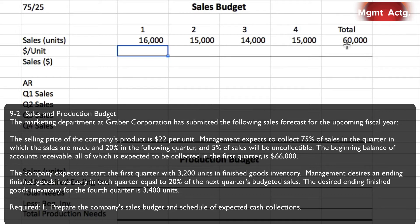Note that when constructing accounts receivable for the end of the year, we will not include the uncollectable 5% — we assume it's just uncollectable. Since all of the beginning accounts receivable is collectable in quarter one, it must have already accounted for the 5%, so we can ignore that. The company expects to start the first quarter with 3,200 units in finished goods inventory, and management desires ending finished goods equal to 20% of the next quarter's budgeted sales.